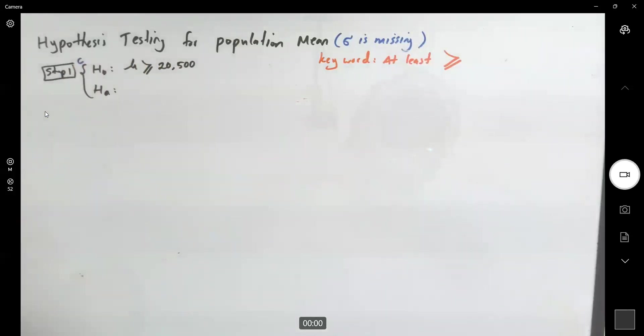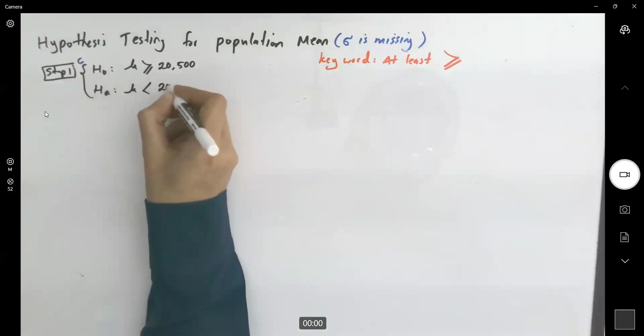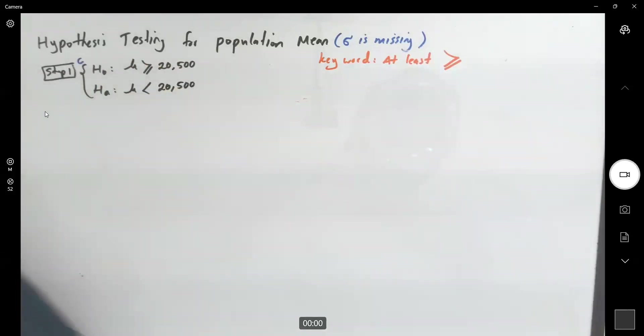So you're going to write the claim next to your null hypothesis. This is your claim. The alternative hypothesis, the opposite of larger than or equal to, is less than. Mu is less than $20,500.